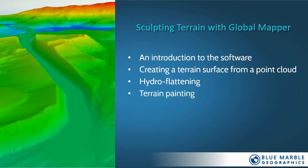Then when we've finished with that workflow, this is where we can have some fun. We're actually going to do some terrain painting — we're going to draw some terrain surface. This allows us to modify a surface based on a simple drawing process, whether it's a line, point, or polygon, we can use that as the basis for a local modification of our surface.